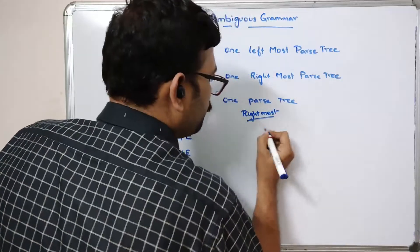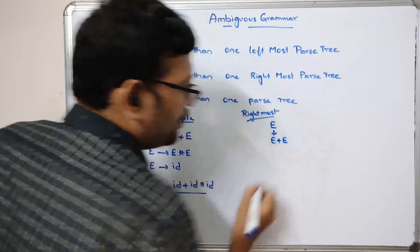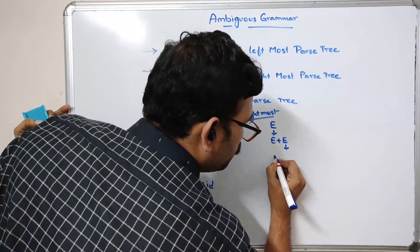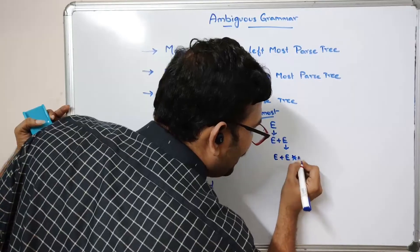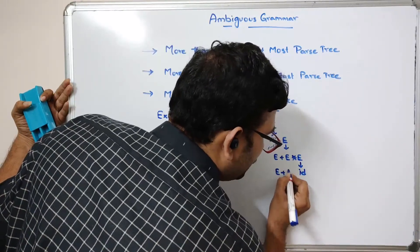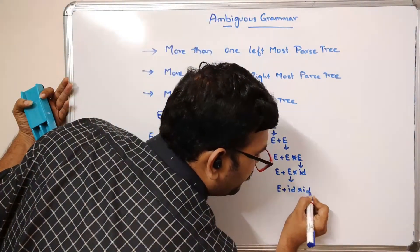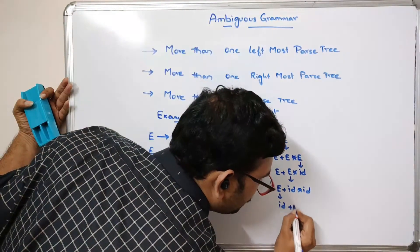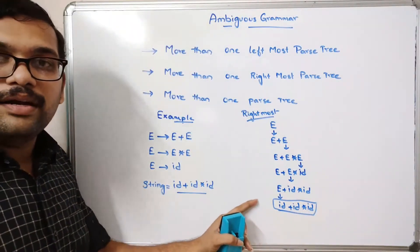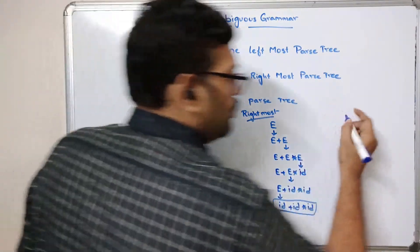First rightmost derivation: Start with E → E + E. The rightmost E is replaced with E + E, giving E + E + E. The rightmost E is replaced with E * E: E + E + E * E. Substituting id for each rightmost terminal step by step gives: E + E + E * id → E + E + id * id → E + id + id * id → id + id + id * id. This is the required string derived by the first rightmost derivation.